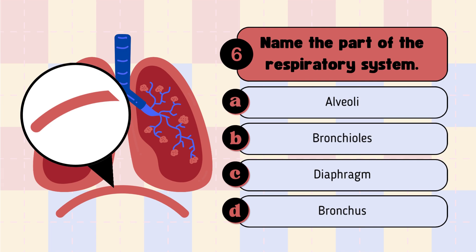Question 6: Name the path of the respiratory system. A. Alveoli, B. Bronchiolus, C. Diaphragm, D. Bronchiolus.